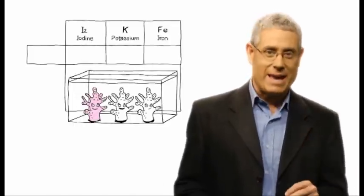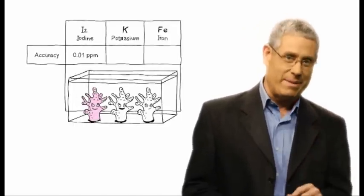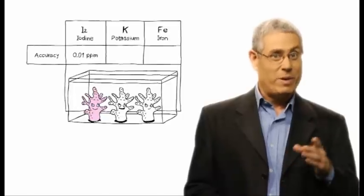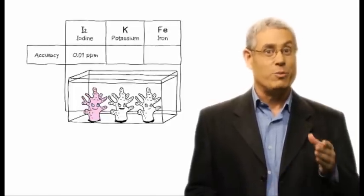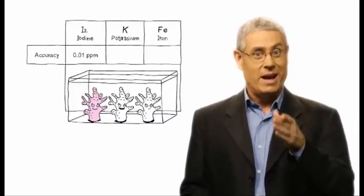The unique iodine test has a true accuracy of 0.01 ppm. This is very significant when maintaining an iodine level of 0.06, and where levels of above 0.09 are toxic.